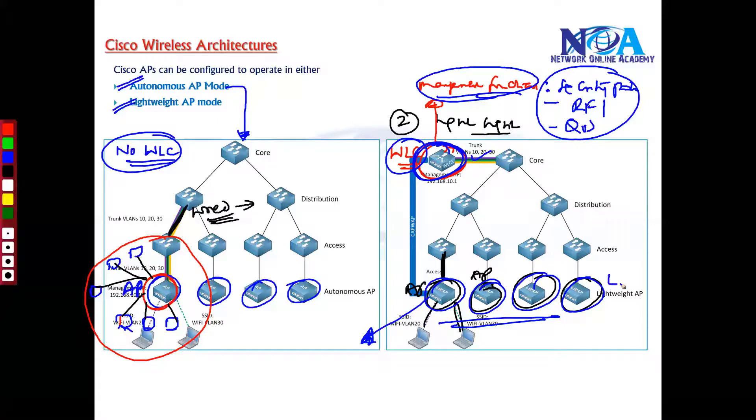There's a reason we call this lightweight access point - because they are not doing the complete job. The majority of the management-related tasks are shifted to the WLC, and with the help of WLC we are going to manage all these access points. Whereas when you come back to autonomous access point mode, there is no WLC.